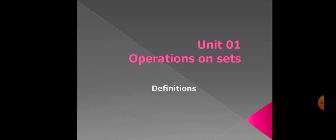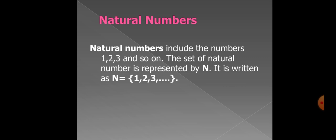So first definition is natural number. Natural numbers include the numbers 1, 2, 3 and so on. The set of natural numbers is represented by N. It is written as N equal to curly bracket 1, 2, 3 and so on, curly bracket close.